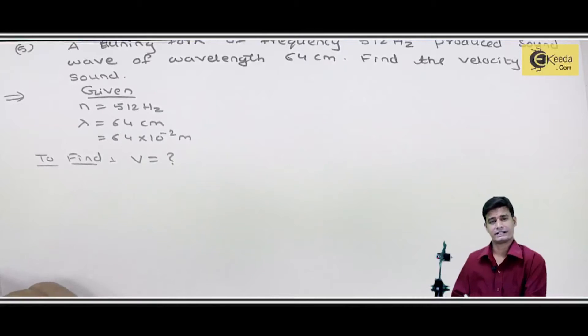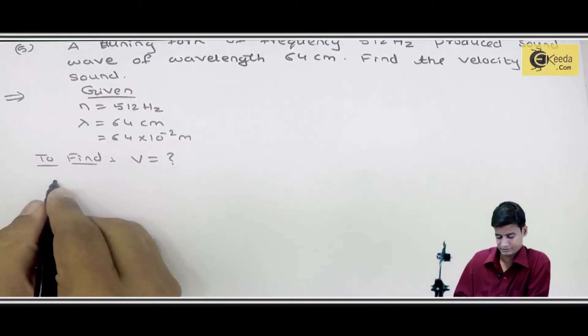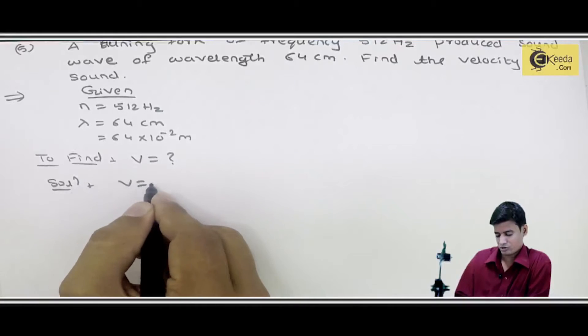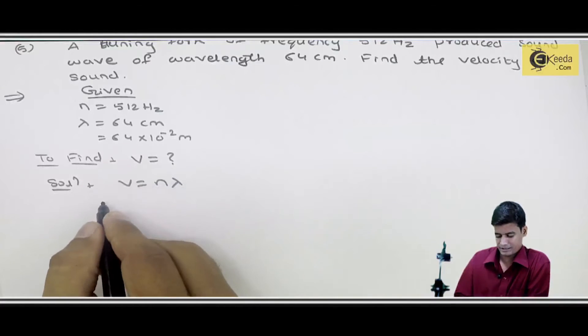We'll use the same formula. What's given in the formula? V equals to N lambda.